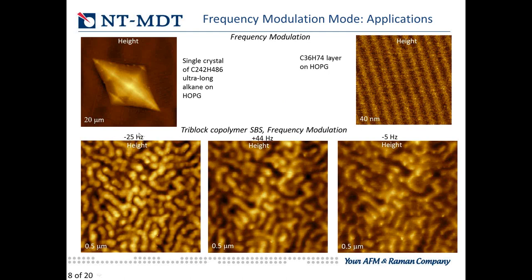One example involves changing the setpoint frequency — going from attractive to repulsive mode, and also the net attractive mode where there is still a negative shift but interaction is partly repulsive. This is an image of 500 nanometer morphology of SBS triblock polymer (styrene-butadiene-styrene). With gentle imaging going toward repulsive force we see some deformation of structures, and even with a less negative setpoint than initial, forces are still present and cause structural deformation. Using amplitude modulation for a long time, I found some systems which cannot be examined with amplitude modulation on very small scales.